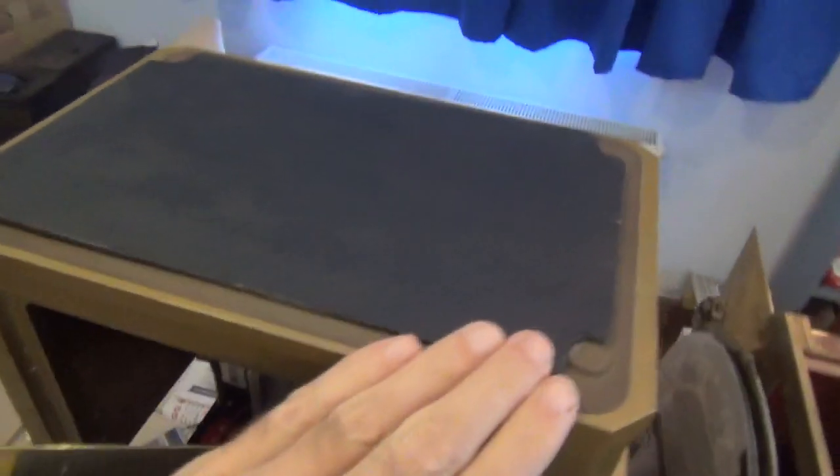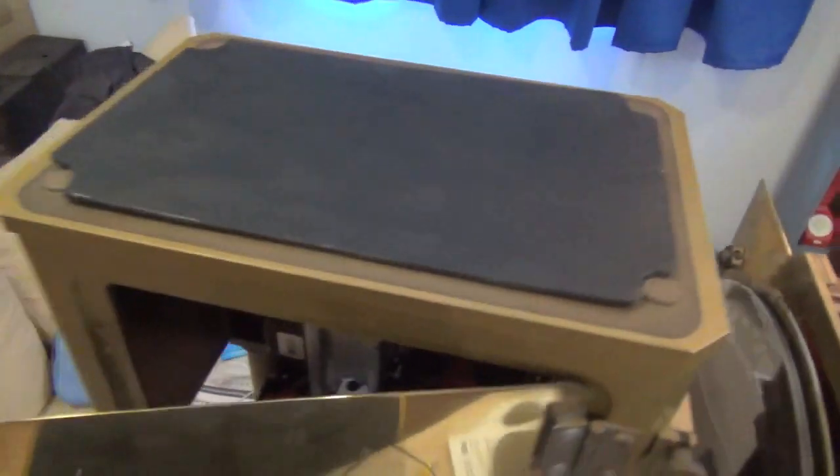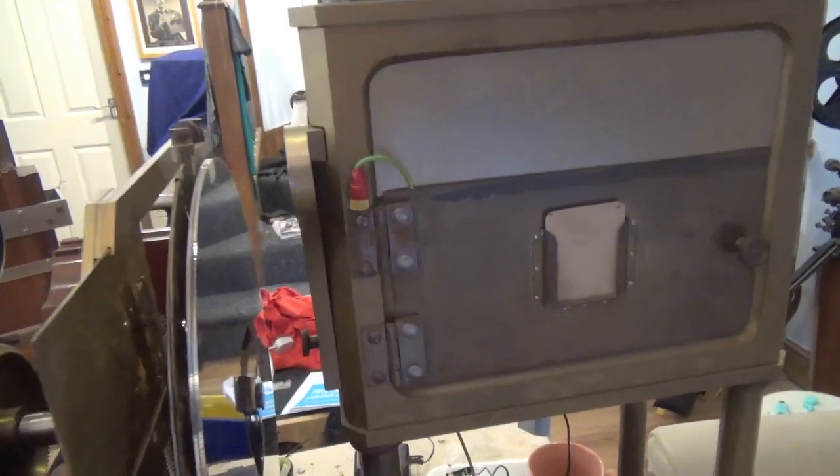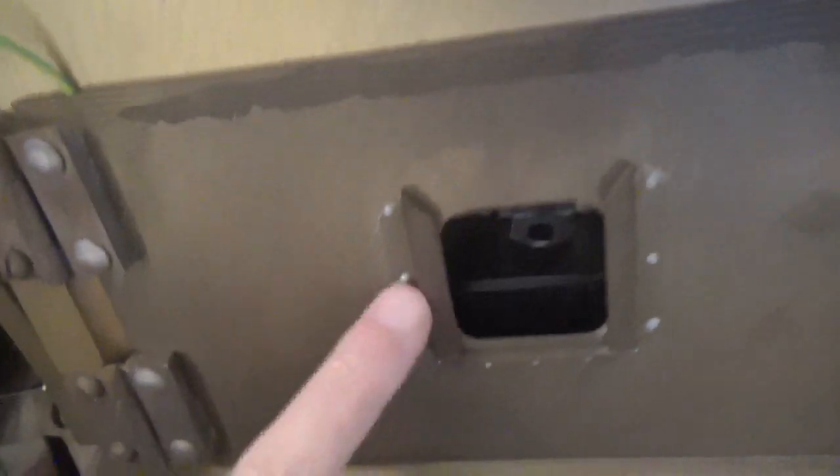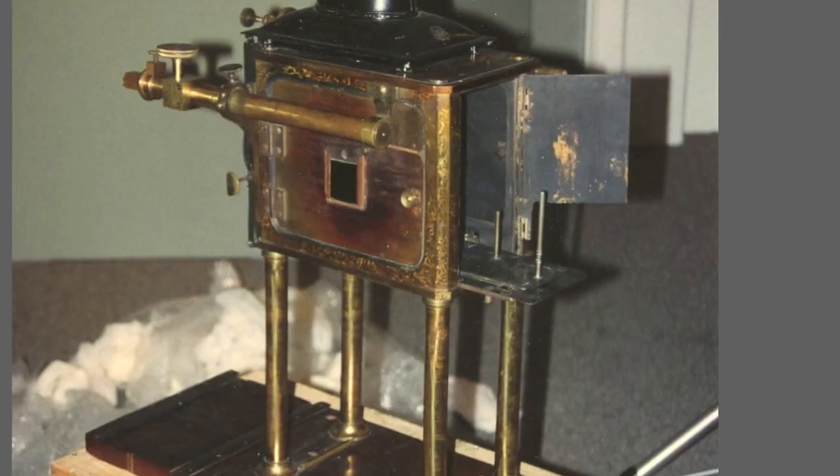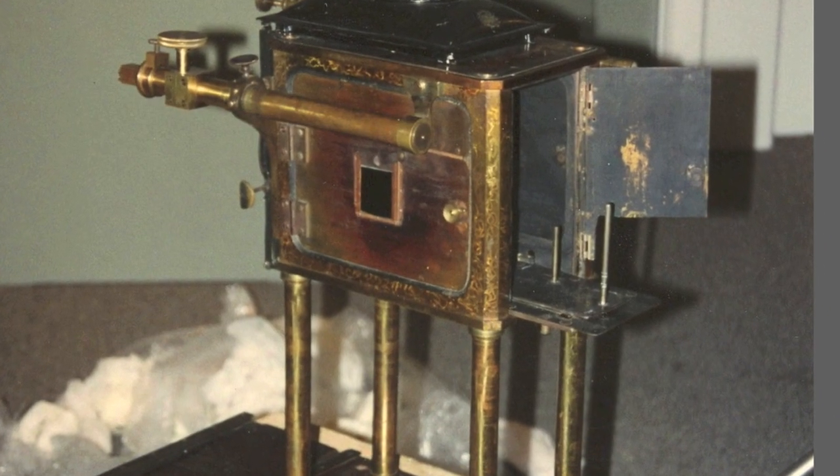So that's just a cardboard plate to keep the light in on this side of the lamp house. That's the far side of the lamp house.